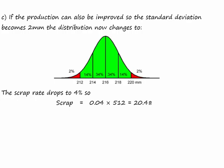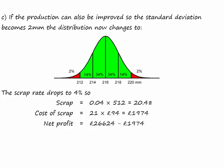4% of 512 is 20.48, so we've got 21 defective components. At £94 each that's £1,974. Take that from £26,624 and we get a net profit of £24,650.